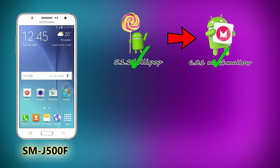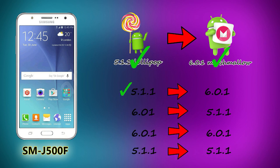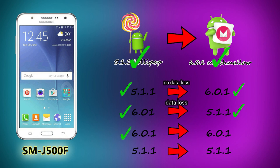In the Samsung J5, it originally comes with 5.1.1 Lollipop OS. If we flash the 6.0.1 Marshmallow update, there will be data loss — photos and apps will be deleted. However, if you flash from 5.1.1 to 5.1.1, there is no data loss. My personal suggestion is to flash the updated OS.